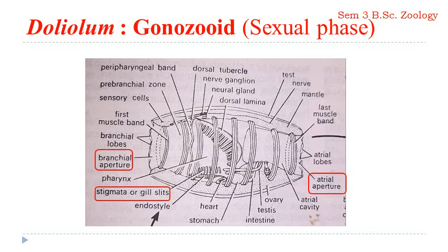This is the structure of Doliolum. As we have seen, Doliolum is a free-swimming pelagic thaliacean. This represents the sexual phase, otherwise known as gonozoid or solitaria, because it is independent — a single individual existing alone. The gonozoid possesses both gonads in the same individual. The outermost body is covered with a test or tunic, but unlike Ascidia, the test is very transparent so all internal structures are clearly visible.